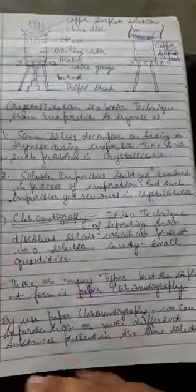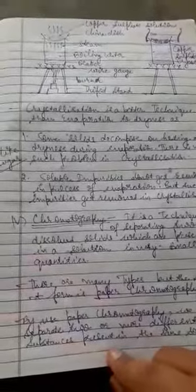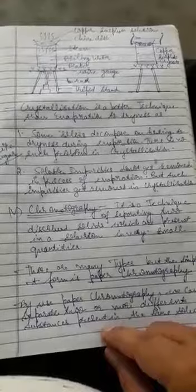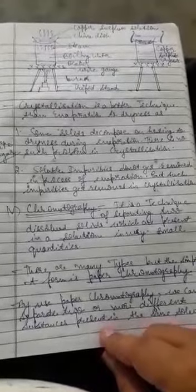Crystallization is better than evaporation to dryness. Why is it better? Because some solids like sugar can decompose on heating to dryness during evaporation. There is no such problem in crystallization.